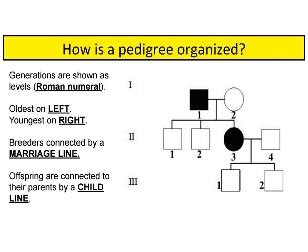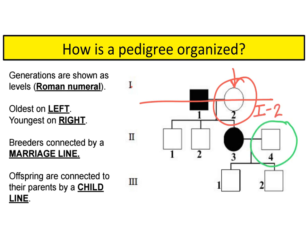If we want to refer to one particular individual, we refer to them with their generation and row number. For instance, this individual here belongs in generation one and is the second in the row, so we refer to them as 1-2. So what would we call this individual? He is in generation two and is the fourth person in the row, so he would be 2-4.